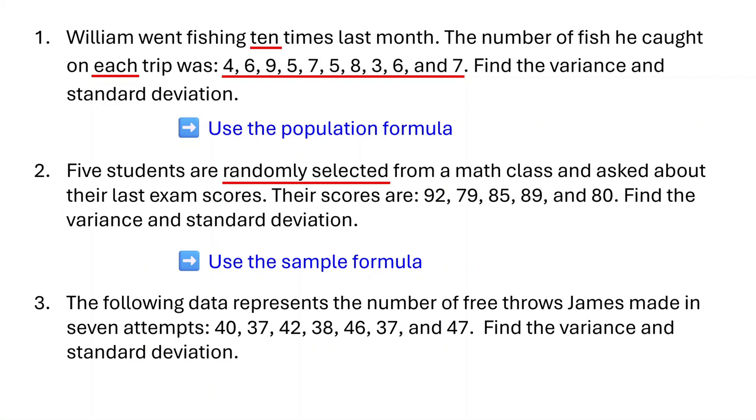Last one. The following data represents the number of free throws James made in seven attempts. Ask yourself, do we have data for all seven attempts? Yes, we do. Since we have data for every attempt James made, this represents the entire population. That means we use the population formula.